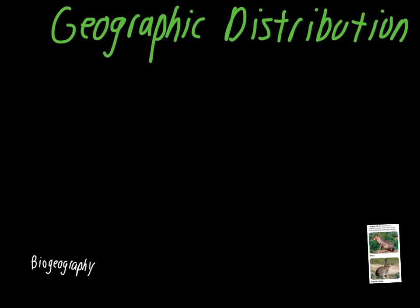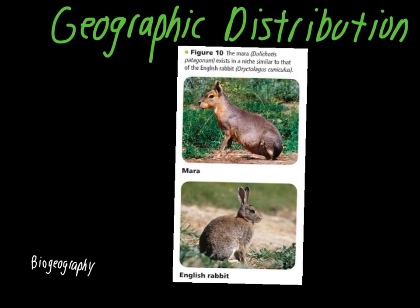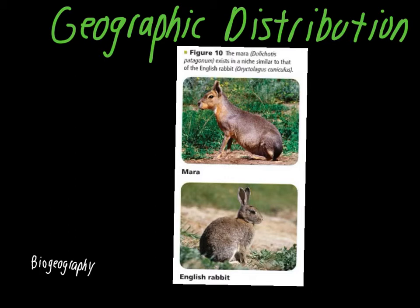The final topic is geographic distribution. Animals are more similar to species in their own geographic area than to animals in similar environments in different countries. A simple example that Charles Darwin recognized is the Mara, a species from South America he saw while traveling on the HMS Beagle, compared to the English rabbit. Even though they occupy similar niches and have a similar role in their environment, they have different morphological structures because the Mara is more similar to other South American animals, whereas the English rabbit is more similar to animals from Europe.